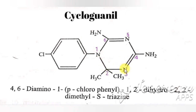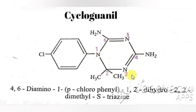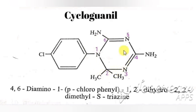Cycloguanil also belongs to the biguanide class, having two guanidine groups (NH2-C(=NH)-NH2). Additionally, cycloguanil falls under the triazine class. A triazine is a six-membered heterocyclic ring containing three nitrogens. Here it is specifically an s-triazine, where 's' indicates symmetrical, otherwise called 1,3,5-triazine.